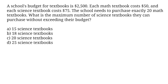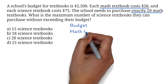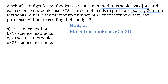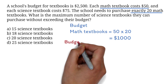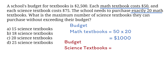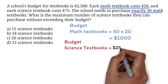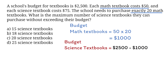We are told how many math textbooks must be purchased — we must buy 20, each costing $50. So the total amount of the budget spent on math textbooks is 50 times 20, which is $1,000. You can use the rest of the money to buy the science textbooks. Since the total is $2,500, what you'll have left will be 2,500 minus 1,000, that is $1,500.